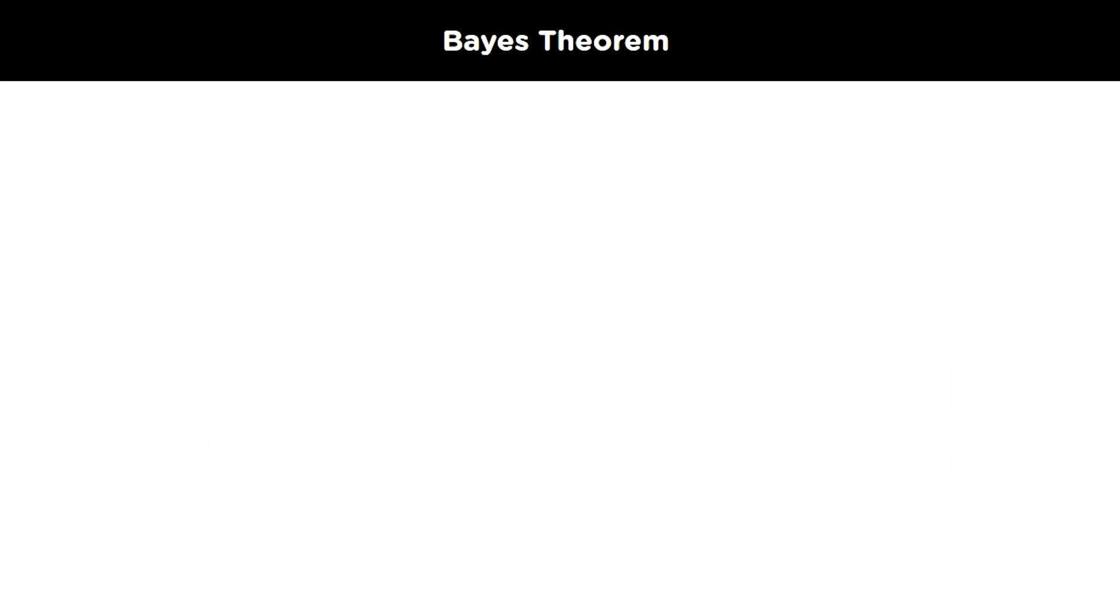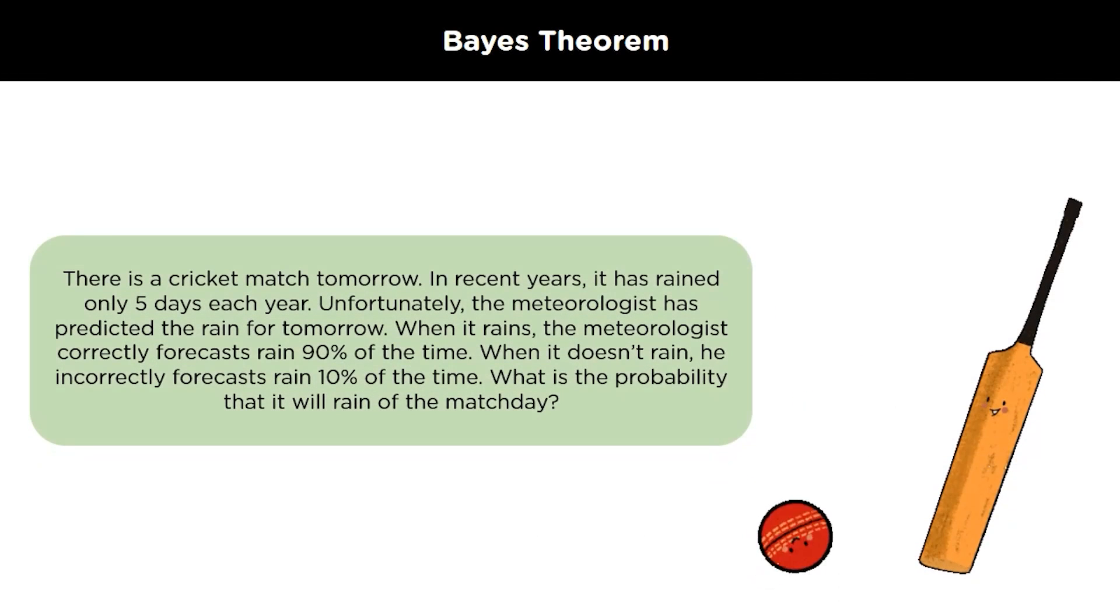Let's solve a problem using the Bayes theorem to understand it better. There is a cricket match tomorrow and in recent years, it has rained only 5 days each year. Unfortunately, the meteorologist has predicted the rain for tomorrow. Now, when it rains, the meteorologist correctly forecasts rain 90% of the time and when it doesn't rain, he incorrectly forecast rain 10% of the time. Let's calculate what is the probability that it will rain on the match day.